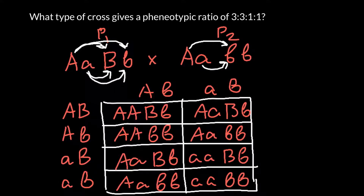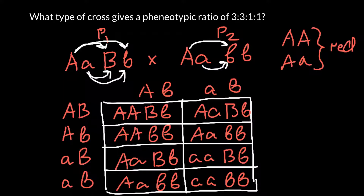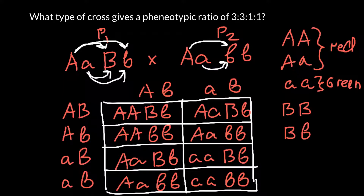Let's assume we crossed two plants where gene A controls color. In simple Mendelian genetics, genotypes that are homozygous dominant or heterozygous produce the same trait — let's say red. And homozygous recessive would produce green. For gene B, dominant phenotype — homozygous dominant or heterozygous — means the plant is tall, and homozygous recessive means the plant is short.